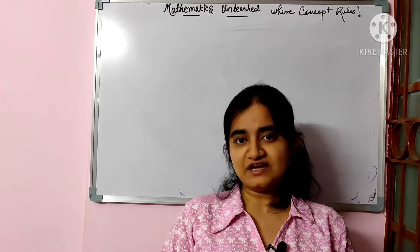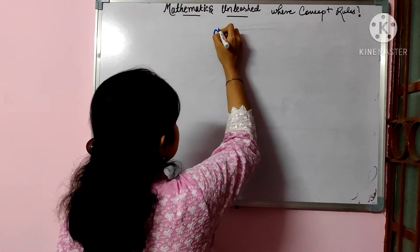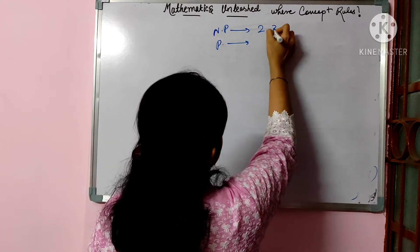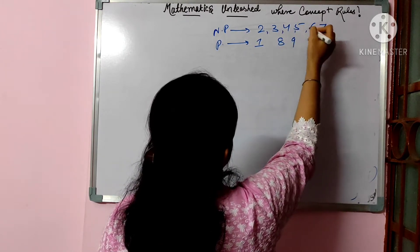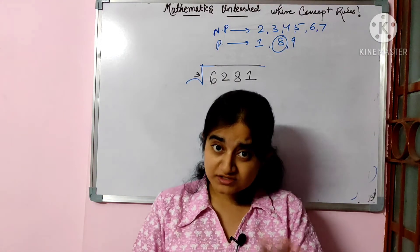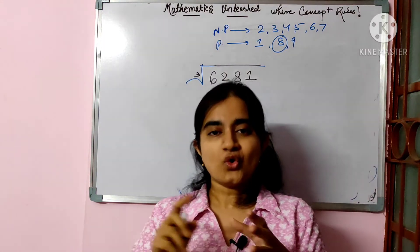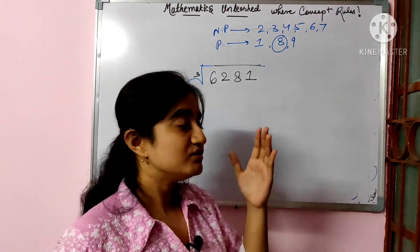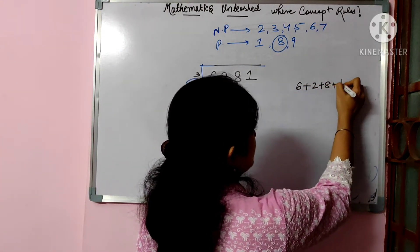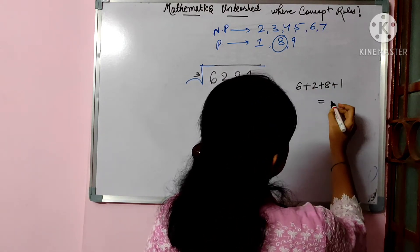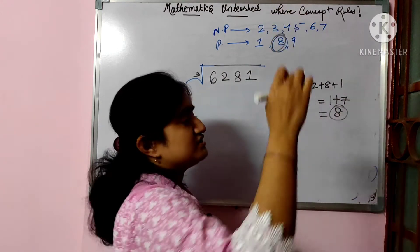Toh mein aapko show karti hoon kaise. Pehle likh lete hain: non-perfect mein 2, 3, 4, 5, 6, 7 aate hain, aur perfect mein 1, 8, aur 9. Ab hum discuss karte hain — ek problem hai: 6281. Hum digital sum karte hain: 6 plus 2 plus 8 plus 1 = 17, phir 1 plus 7 = 8. So the digital sum is 8.